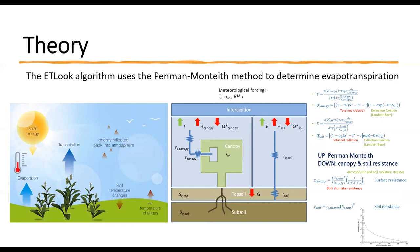The ETLOOK algorithm uses the Penman-Monteith method to determine evapotranspiration. This method needs information from different sources to make the calculations. ETLOOK separately determines the T, canopy transpiration, and E, evaporation from soil.